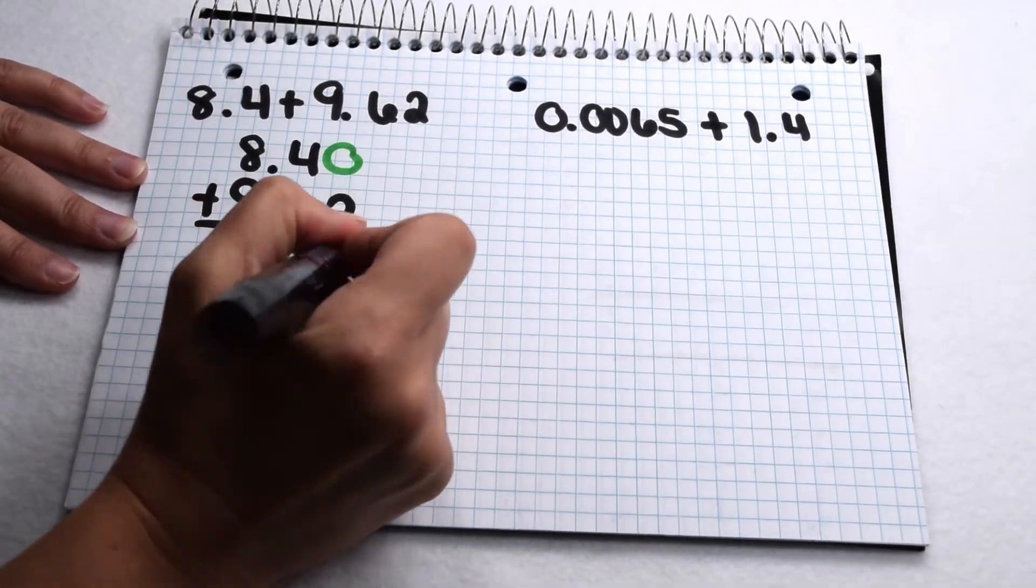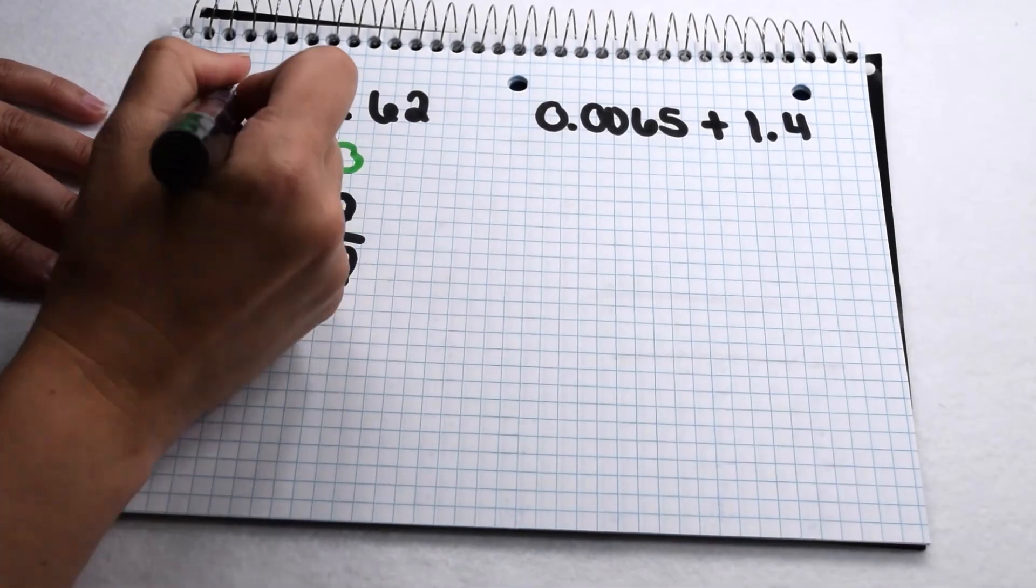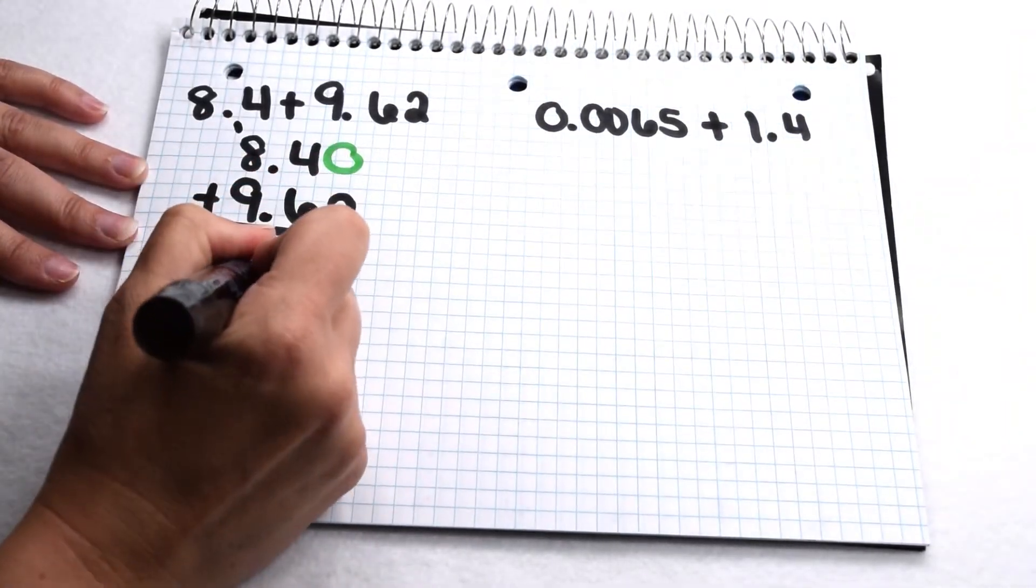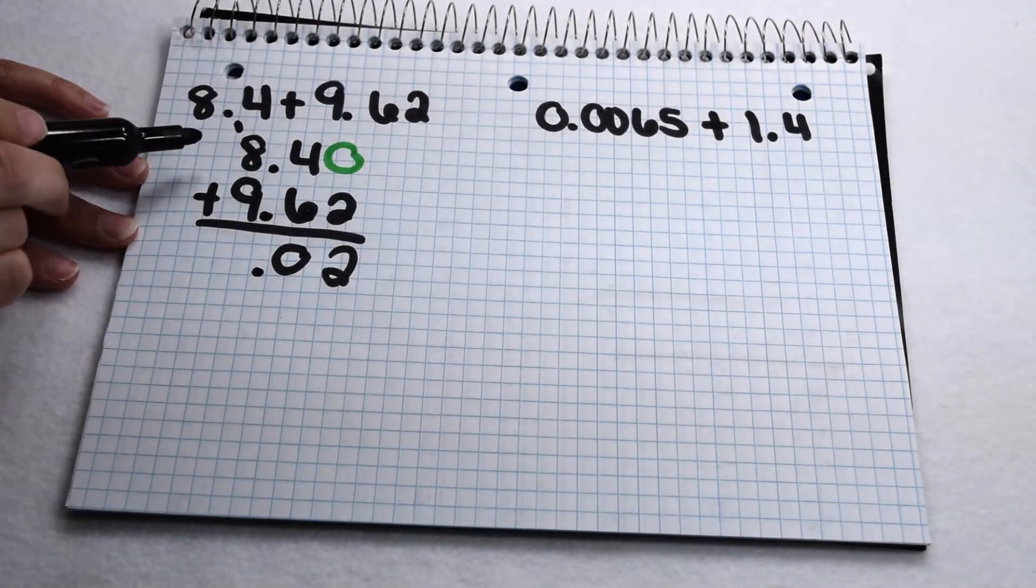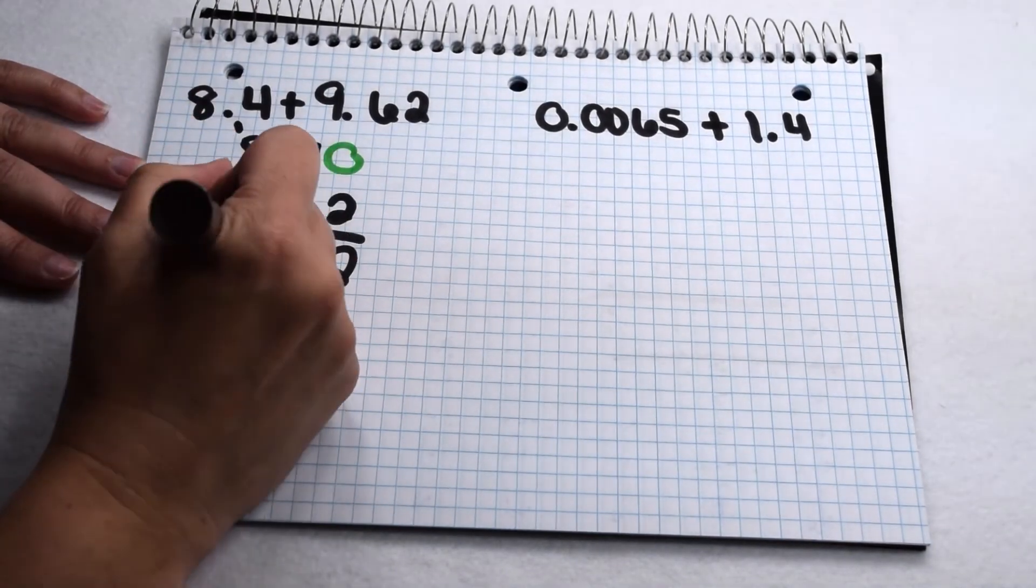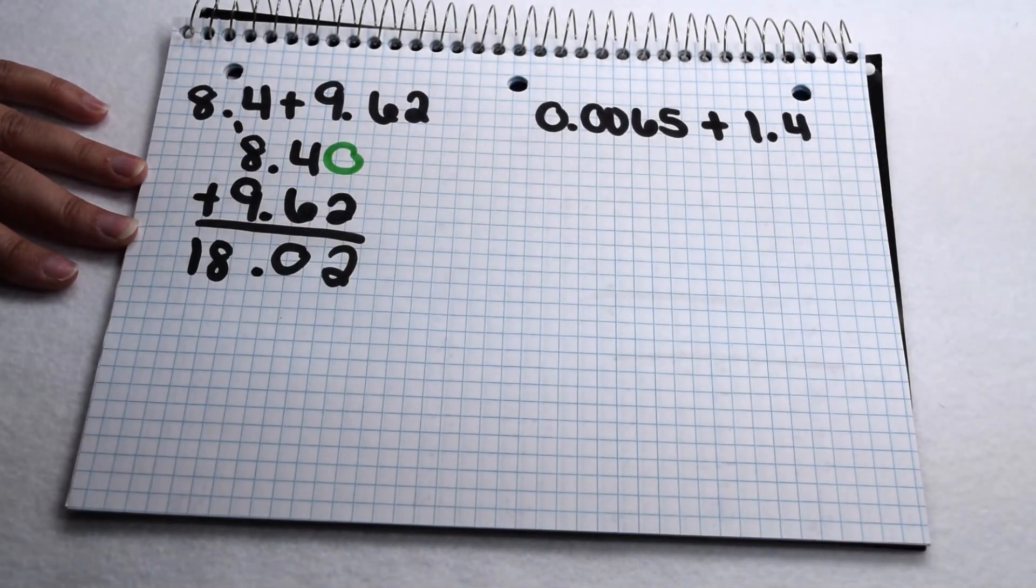0 plus 2 is 2. 4 plus 6 is 10. Put down my 0, carry my 1. My decimal comes straight down, so it continues to line up. 8 plus 9 is 17, plus 1 more is 18. So we come out with 18 and 2 hundredths.